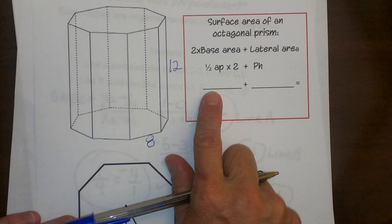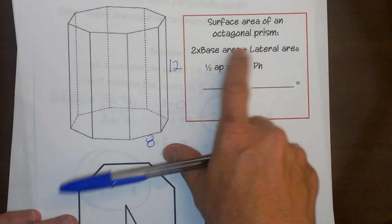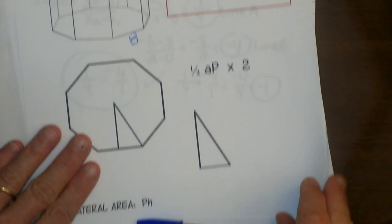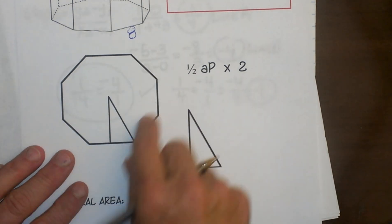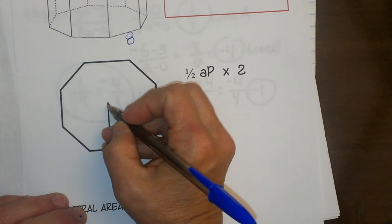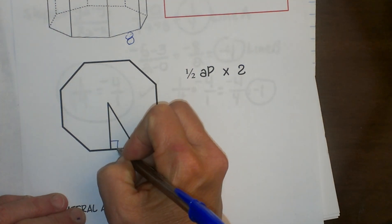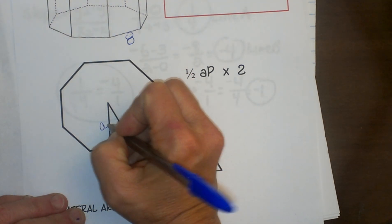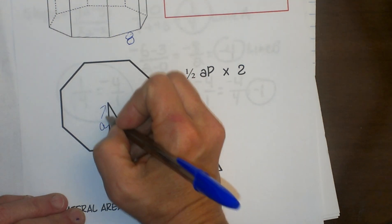The first thing we're going to do is find the base area and we're going to double it. We have an octagon. I'm just looking straight down on this. I've got to draw a triangle in here because I need to find this apothem. That's my apothem from the center to the side.